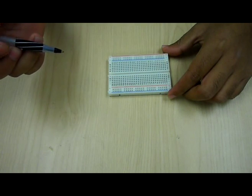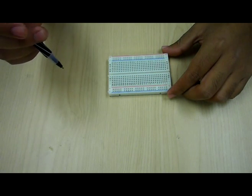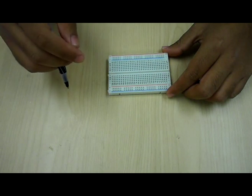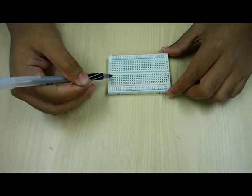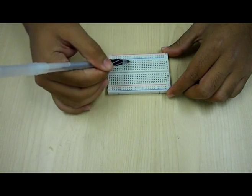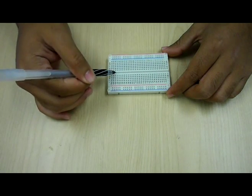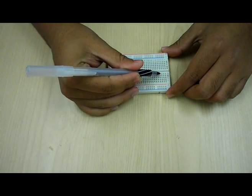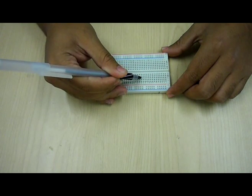We use this to build prototype circuits with temporary connections. In this area right here that's separated by the middle, you have connections going from here to here. It's not connected sideways.